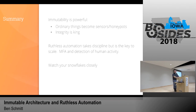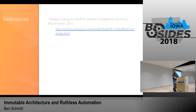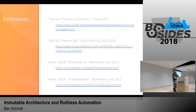I went through this pretty quick. I think immutability is very powerful — it's a new-ish technique we should consider as a security defense. Ordinary things can become sensors or honeypots. If you're SSH-ing in with a pink sombrero on, multi-factor that — it should be rogue, but you can document why. Otherwise, if anyone else is SSH-ing in, it's a pen test. Integrity is king — cryptographic signing to assure integrity is going to become more popular in operating systems. Ruthless automation takes discipline: take the time to automate, get it under source code control, dual approval, and multi-factor. And watch your snowflakes really closely.